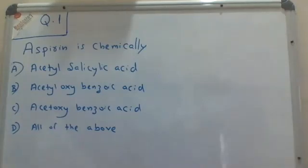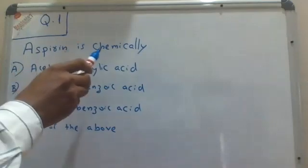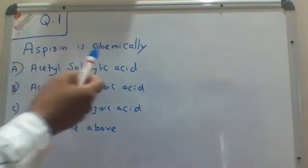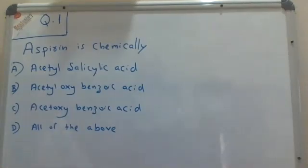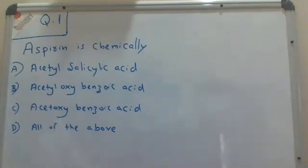Now the question is: what is aspirin chemically? Choice A: acetylsalicylic acid. Choice B: acetyloxybenzoic acid. Choice C: acetoxybenzoic acid. Choice D: all of the above. Before coming to the answer, we should know the structure of aspirin.